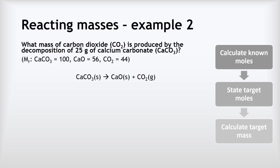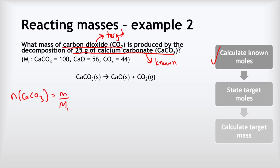Example two: what mass of carbon dioxide CO2 is produced by the decomposition of 25 grams of calcium carbonate CaCO3? Carbon dioxide is our target and calcium carbonate is our known. The number of moles of CaCO3 = m / Mr. Our mass is 25 grams and the Mr is 100, so 25 divided by 100 gives 0.25 moles.